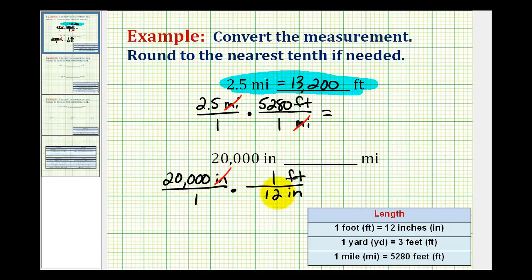Now we've converted inches to feet, and we're left to convert feet to miles. We'll put feet in the denominator and miles in the numerator. The conversion is 1 mile equals 5,280 feet. So we'll put 1 mile in the numerator and 5,280 feet in the denominator.